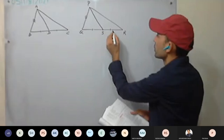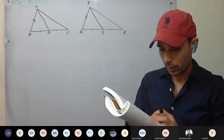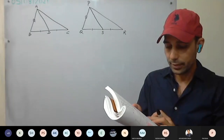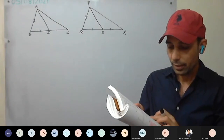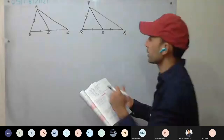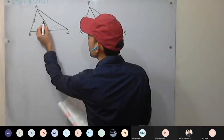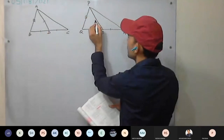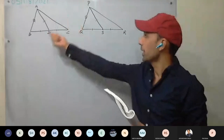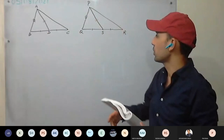They are equal. And the median AD of triangle ABC — median AD equals median PS. Median AD equals PS. And we have to prove triangle ABC is congruent to triangle PQR. So how are you going to prove it? Anyone in class?